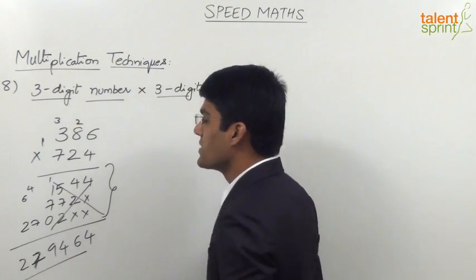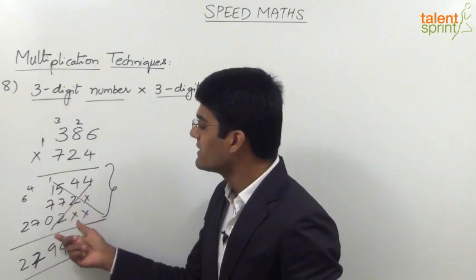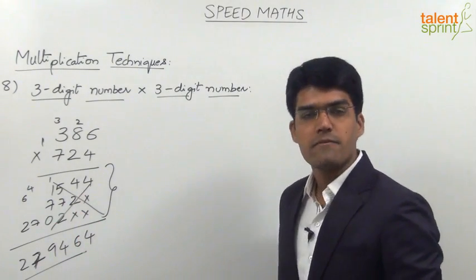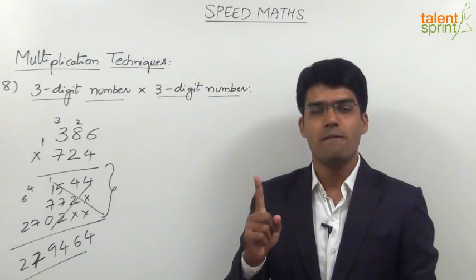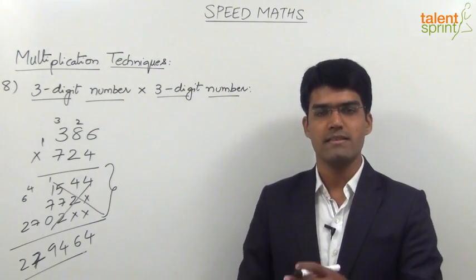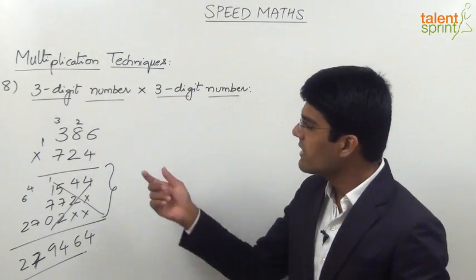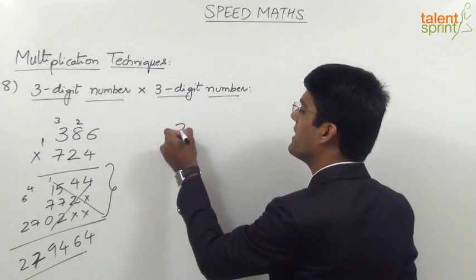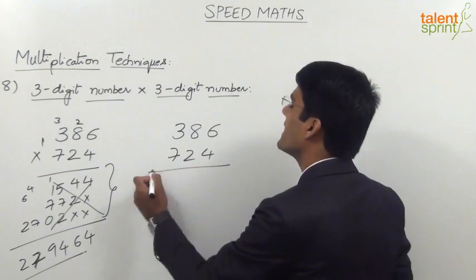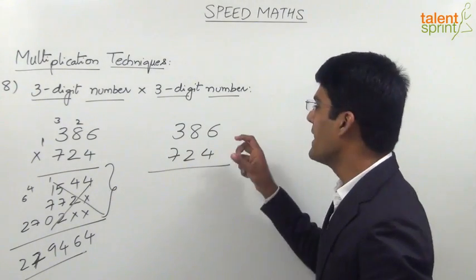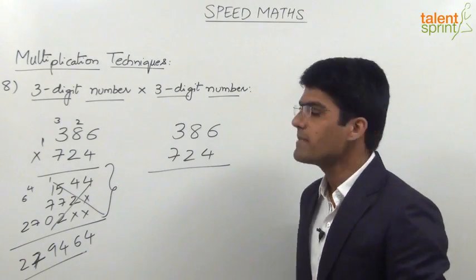So let's see how we can multiply these numbers without writing all these steps and directly get the required answer. As we have seen in two-digit multiplication, we have three steps: multiply unit places, cross multiplication, and multiplication of tens places. Here also for three-digit numbers like 386 into 724, we can get the answer by multiplying different digits using five different steps.